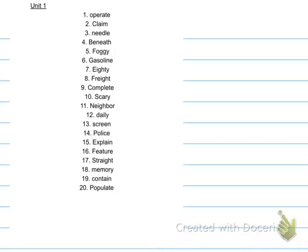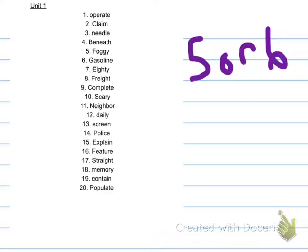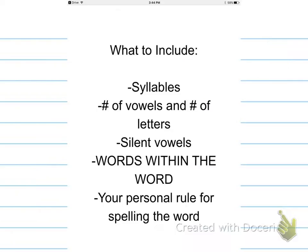The first thing you are going to do today is pick five or six words that you're going to use. I'm going to start with the word 'operate' to show you what to do for the word profile. Once you have your word, each word is going to get a little profile, similar to when we did the stay profiles. Here are a few of the things you might talk about.